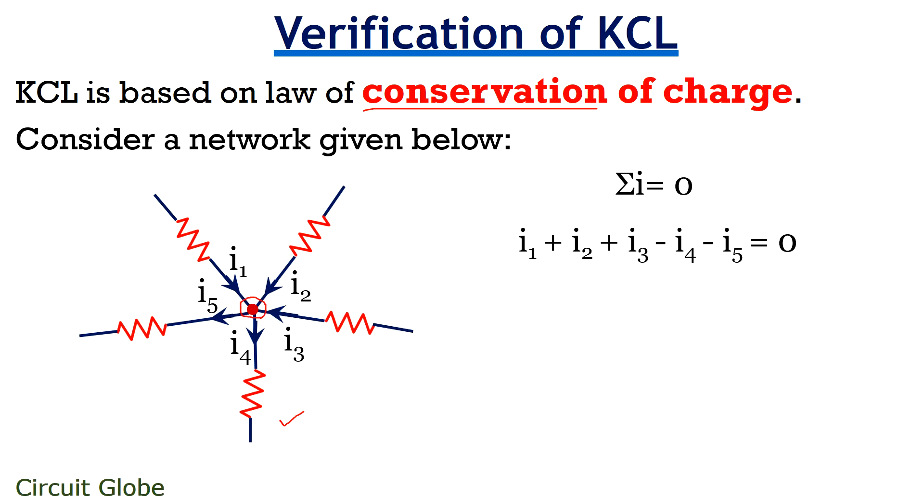And as we can see that the direction of currents is not same. So if we consider the current entering the junction as positive, then surely we have to consider the current leaving the junction as negative. Therefore, we get this equation. On further transposing the negative values towards RHS,